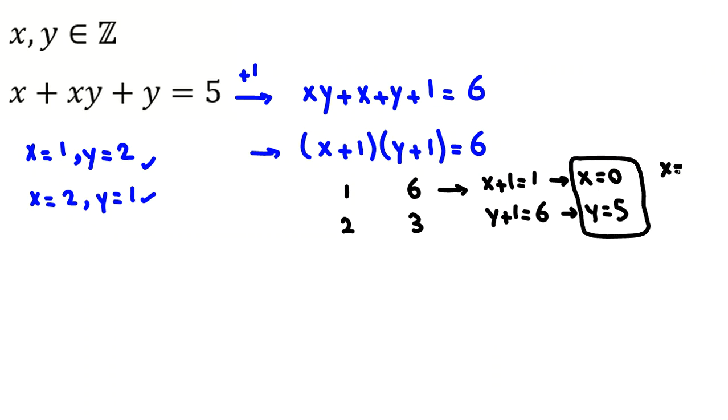And the other answer, you can say, because it is symmetric with respect to x and y, x equals 5, y equals 0. So x equals 5, y equals 0 is for what case? 6, 1. So we switch here, we don't need to check 6, 1.